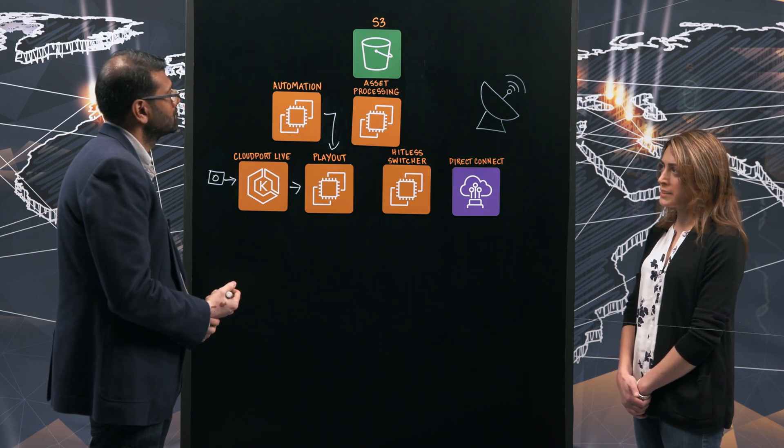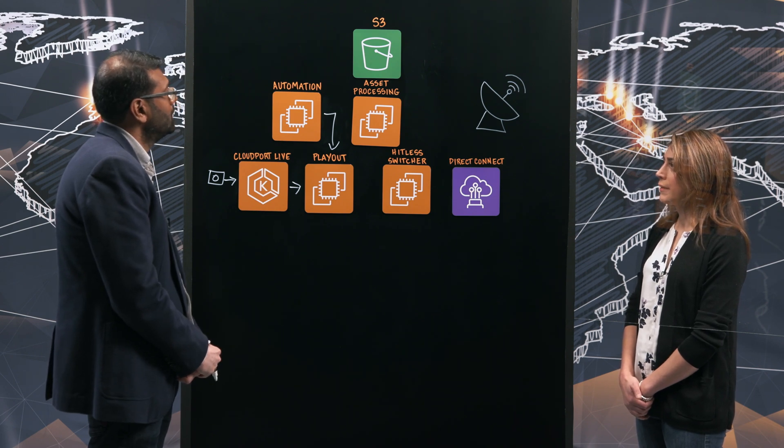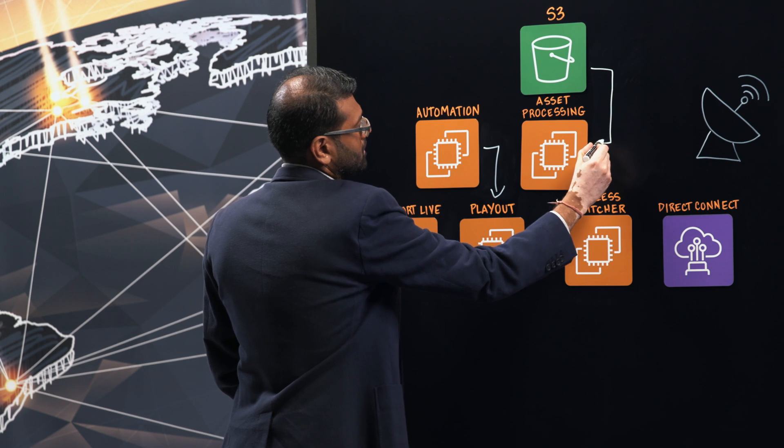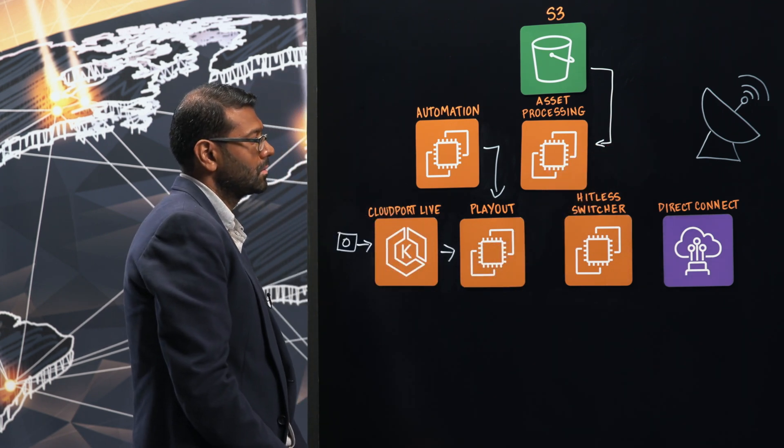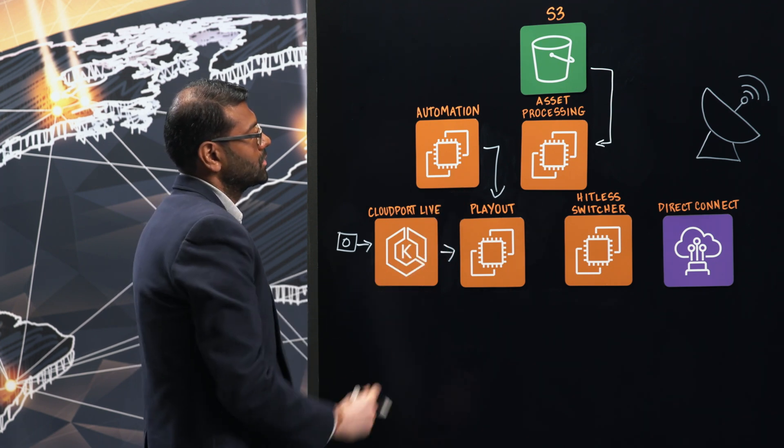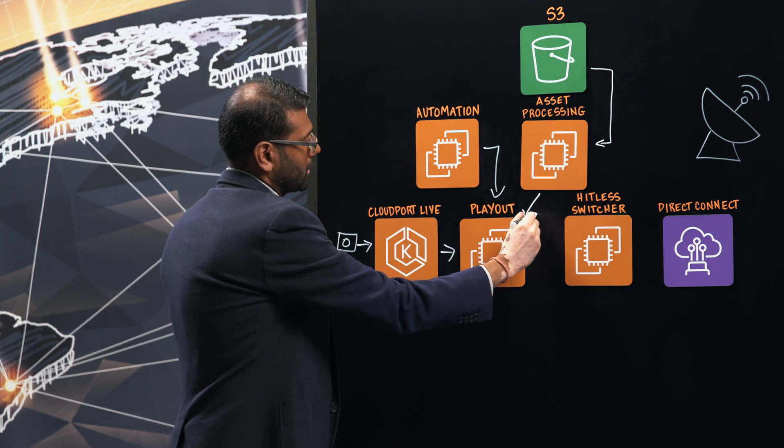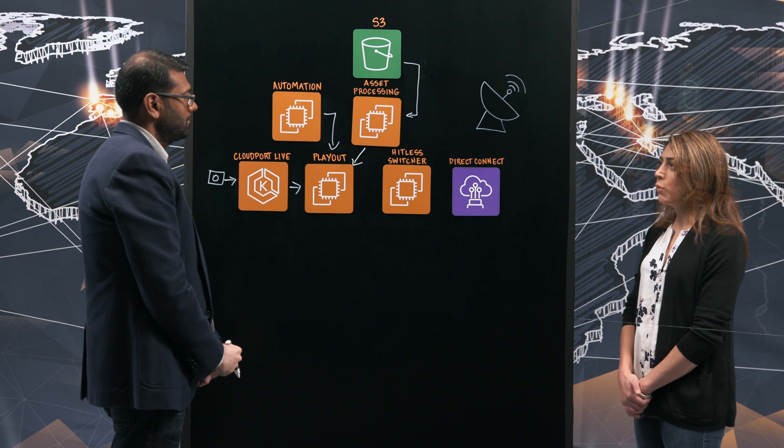I see. So how do you schedule that? How does that combine with the live stream data that comes in? In the case for graphics, for example, Amagi's asset processing engine kicks in. In this case, the graphics may be required—a ticker or a lower third might be required in a live event. The asset processing engine kicks in based on the automation schedule and applies that graphic to the playout.